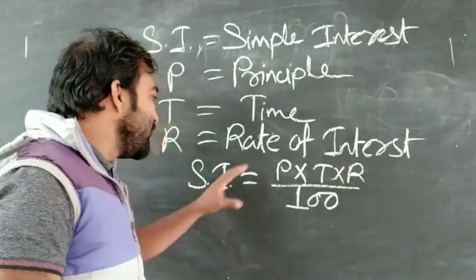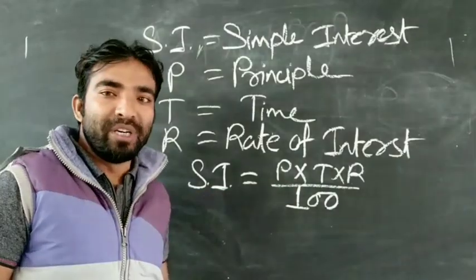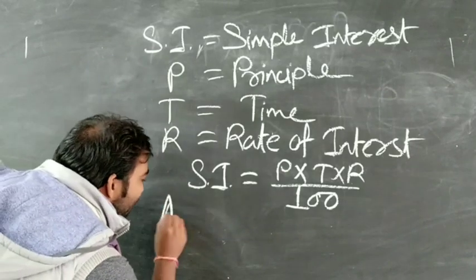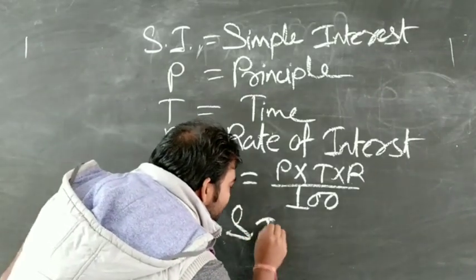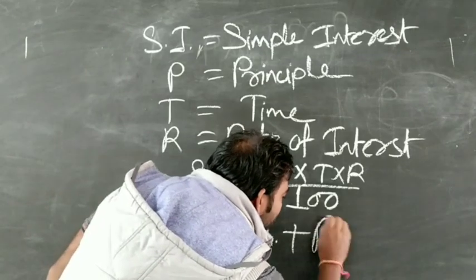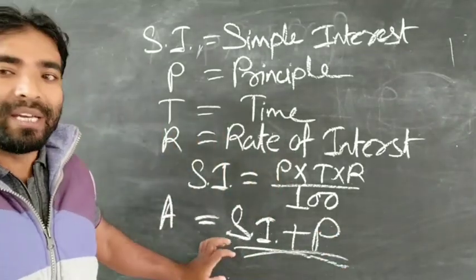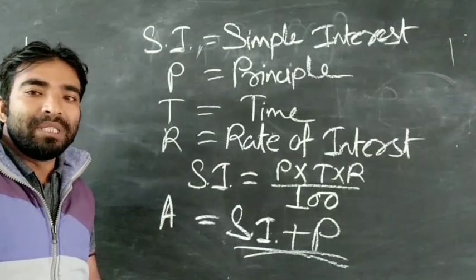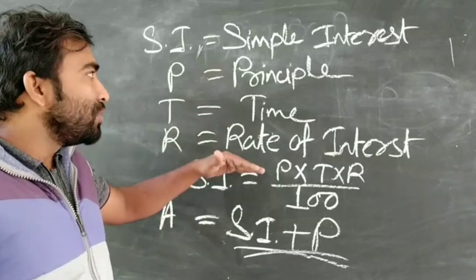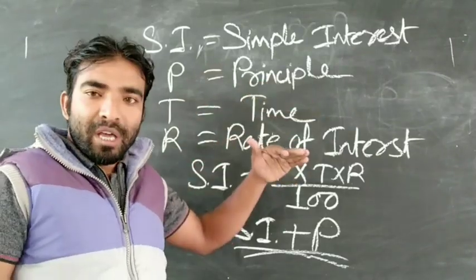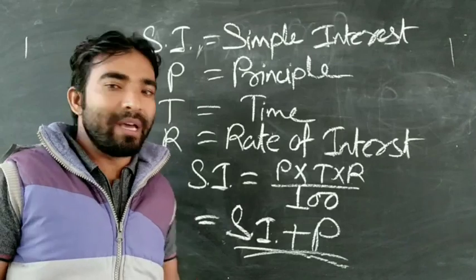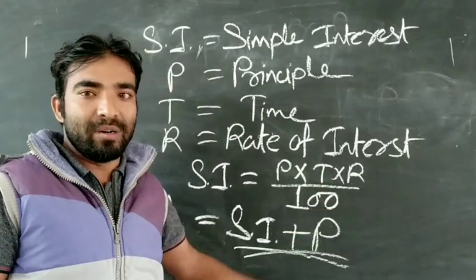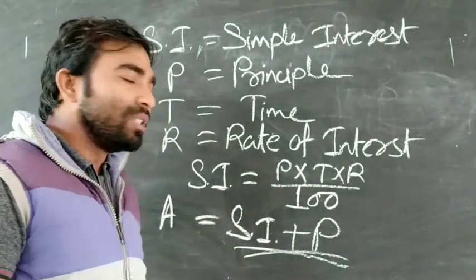If we know the Principal, Time, and Rate of Interest, we can easily find the Simple Interest. From Simple Interest we can also find the Amount: Amount = SI + Principal. This is all about Simple Interest, which you have already learned in Classes 6 and 7.